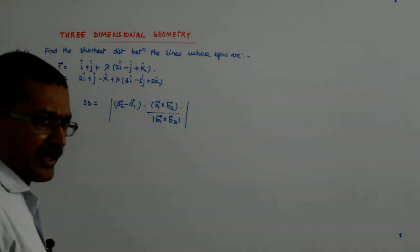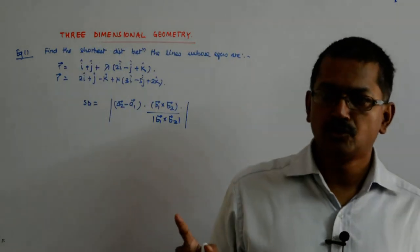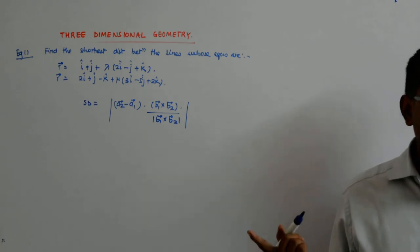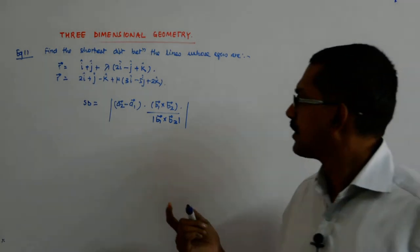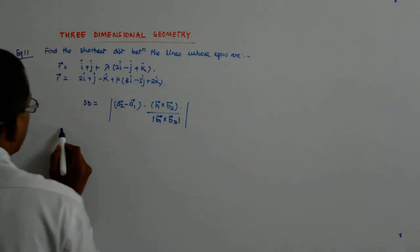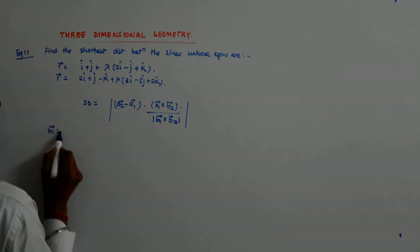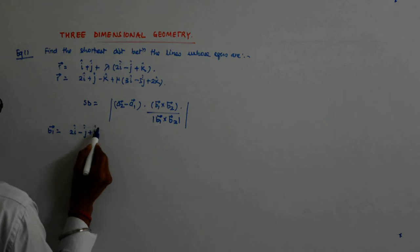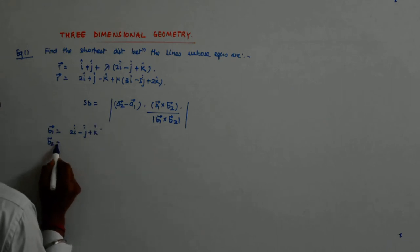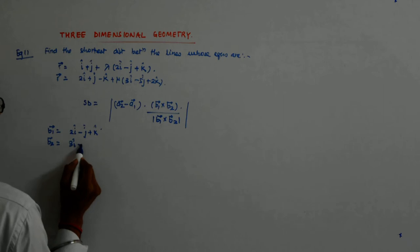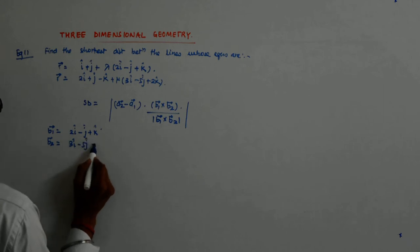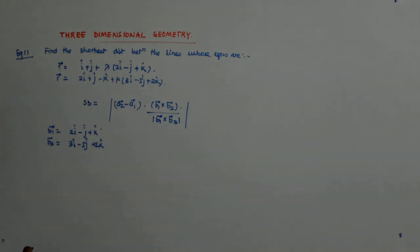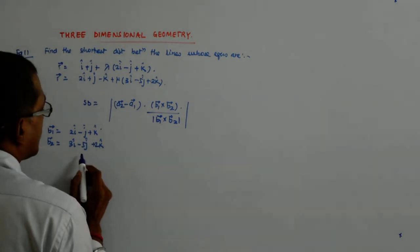Now, as I did in the earlier questions, you will have to be very quick in realizing which is your B1 and B2. Which are your B1s and B2s? Correct. So, your B1 is 2i cap minus j cap plus k cap. And your B2 is 3i cap minus 5j cap plus 2k cap. Okay?